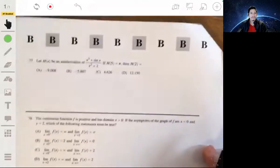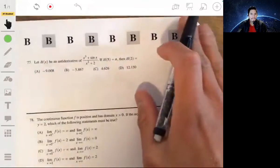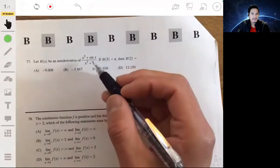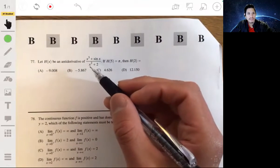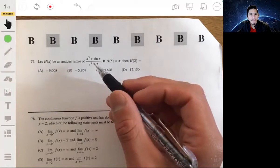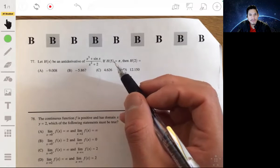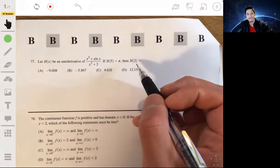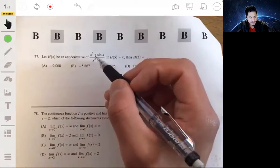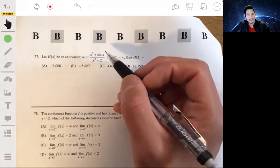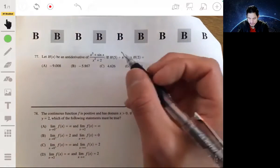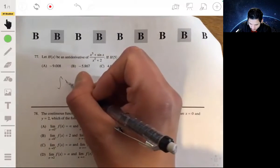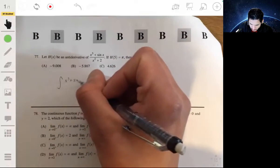Let's see, 77. Let large H of x be an anti-derivative of this expression here. And it says if large H of 5 is pi, then large H of 2 is. Okay, so if this is an anti-derivative, then we can set up an integral with this. So we can have an integral of x cubed plus sine of x.